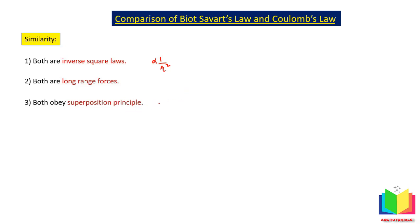Regarding superposition: if we have charges Q1, Q2, Q3, the net electric field at any point is equal to the sum of electric fields produced by all charges. Similarly in Biot-Savart's law, we take different current elements I dL1, I dL2, and the net magnetic field at a point equals the sum of magnetic fields produced by all the current elements.